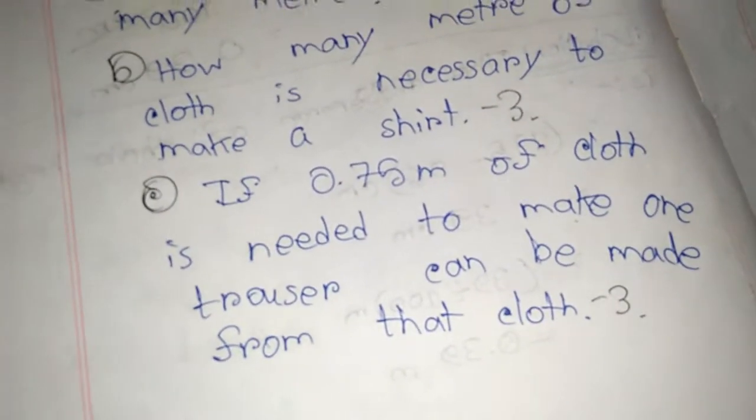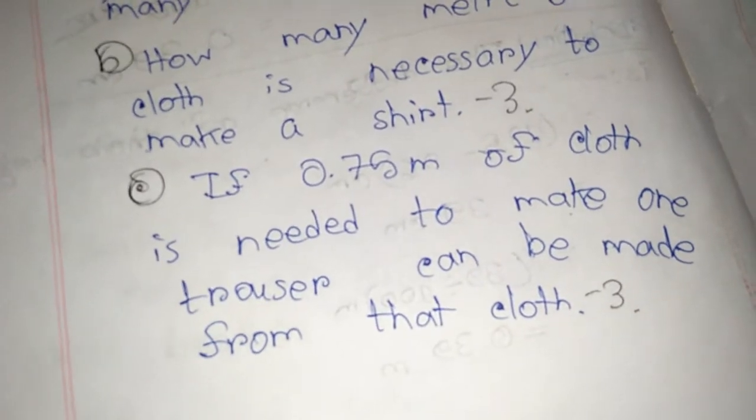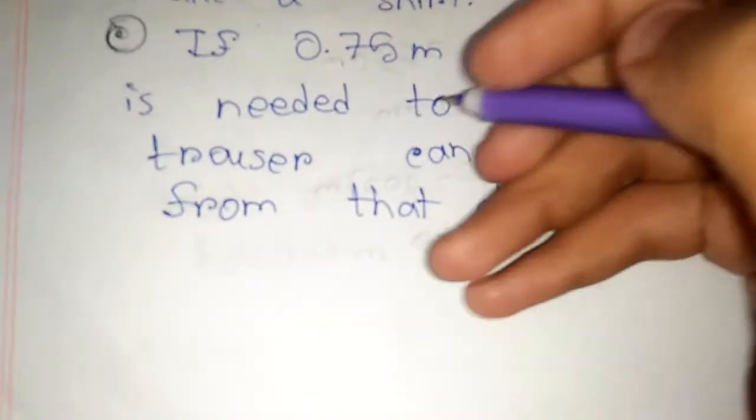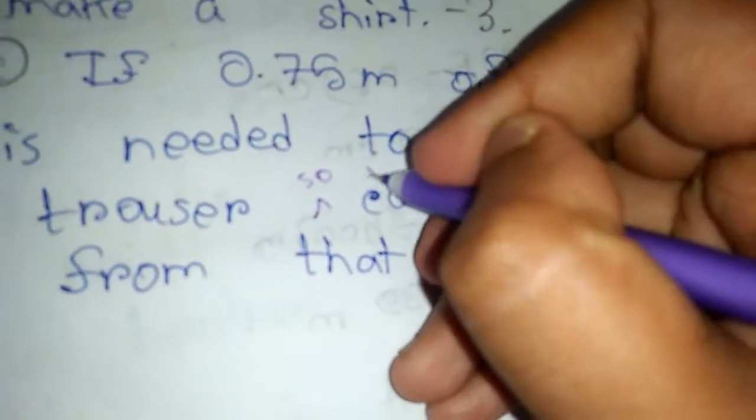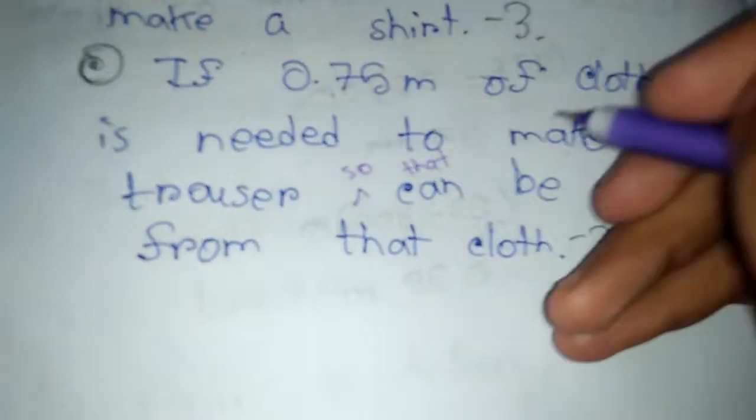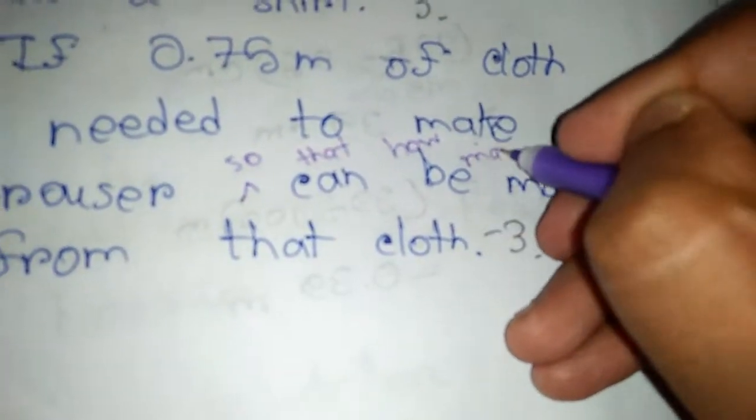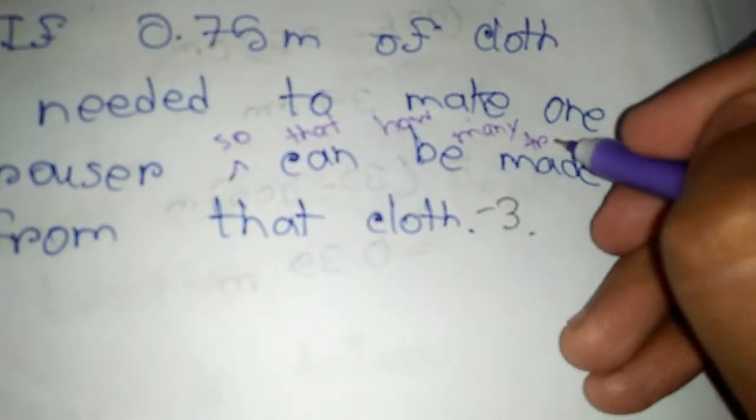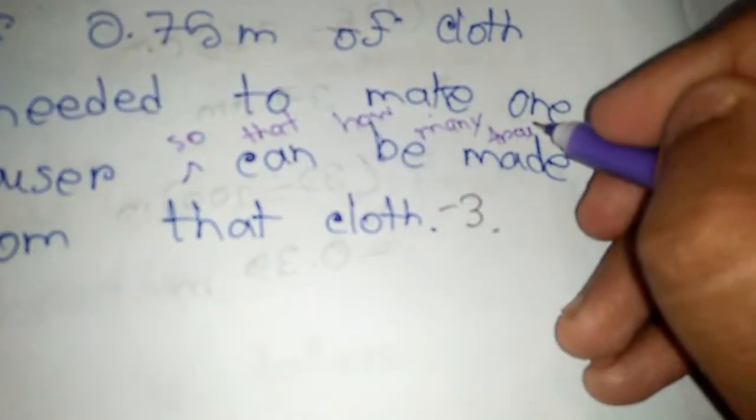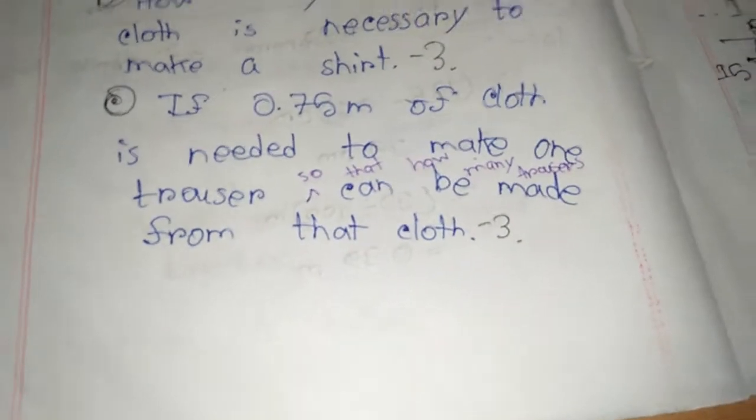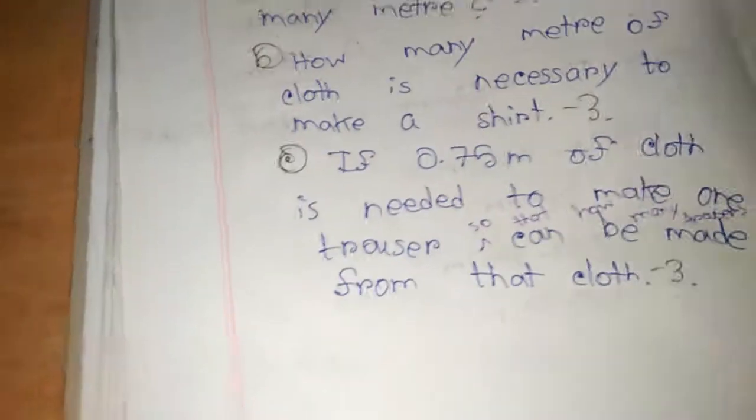Now for question C: If 0.75 meter of cloth is needed to make one trouser, how many trousers can be made from that cloth? Here is the solution to C.